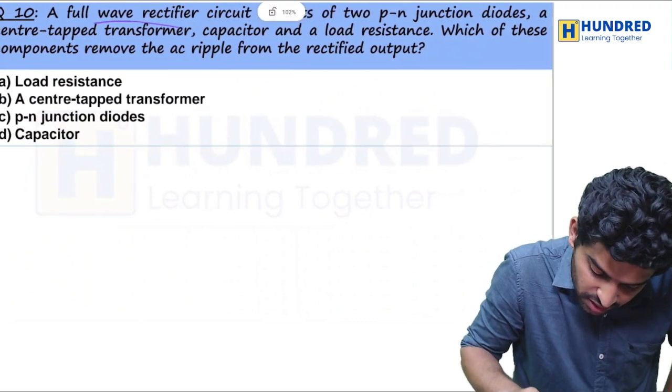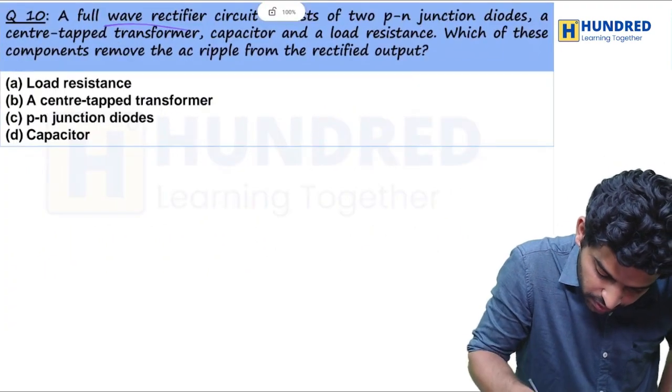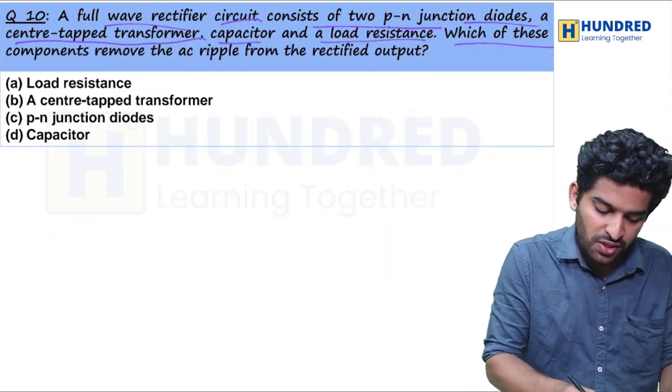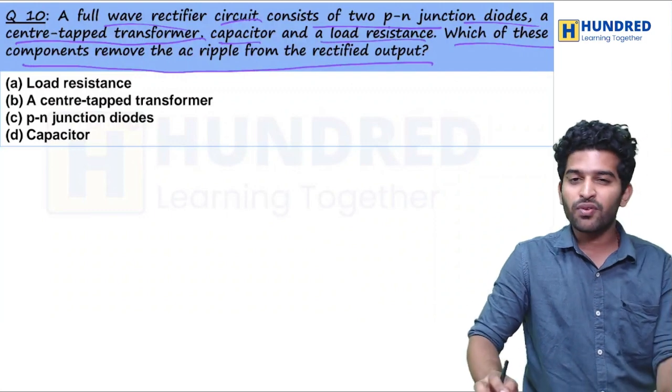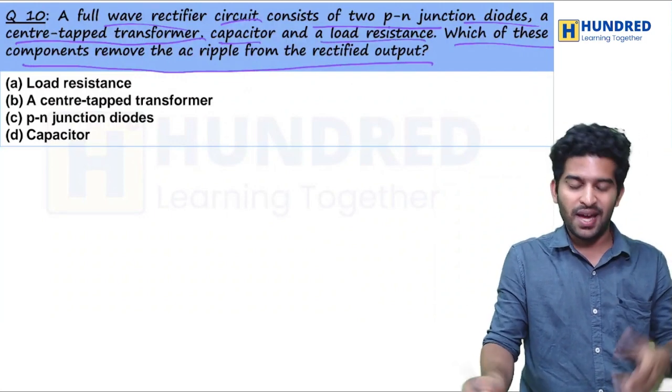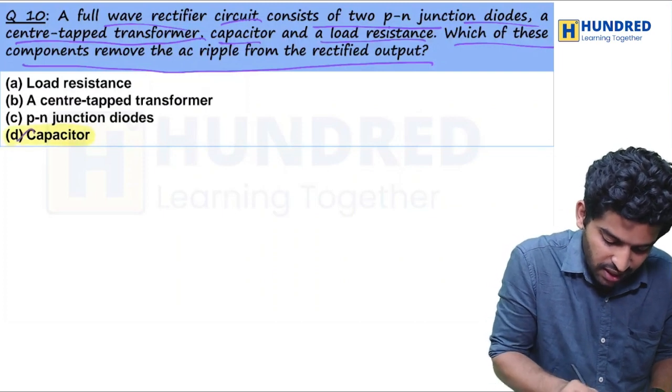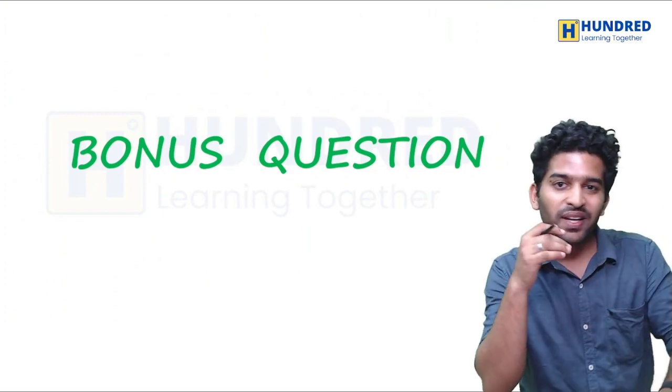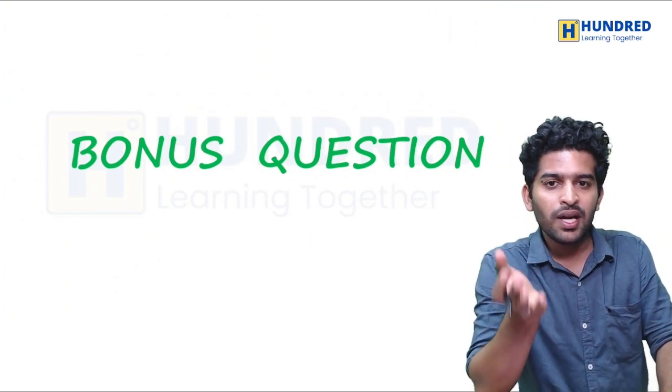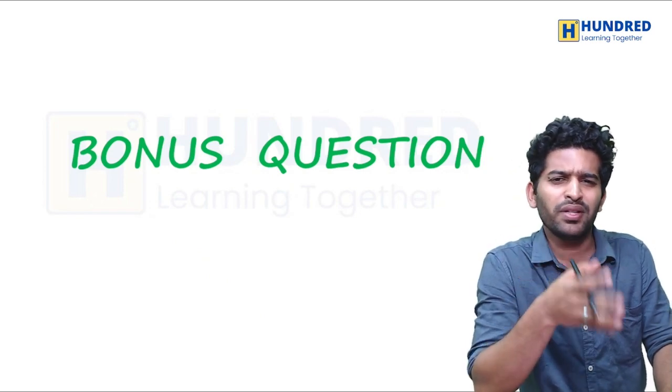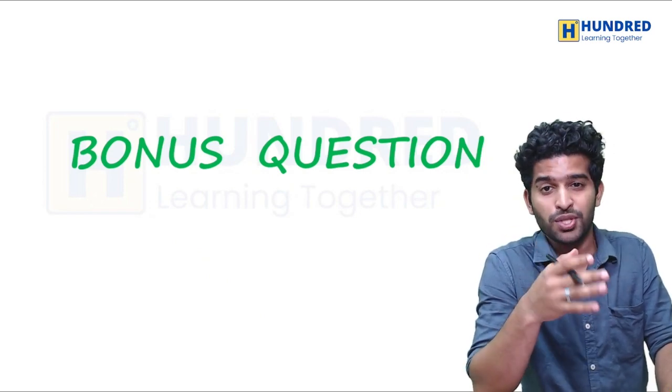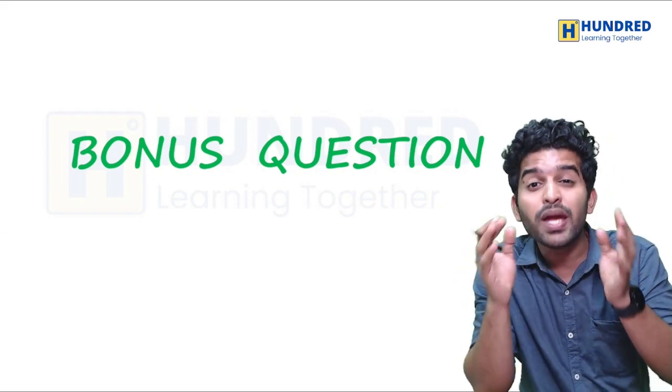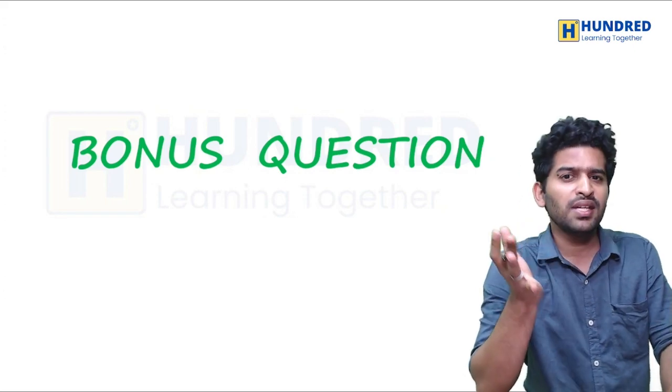A full wave rectifier circuit consists of two PN junction diodes and a center tap transformer, capacitor and a load resistance. Which of these components remove the AC ripple from the rectified output? Obviously, we know that it is capacitor. Capacitor removes the AC ripple. This is the direct question. This is the state board. These are statement questions. These are application of direct questions. Proper state board knowledge makes it easy to answer.